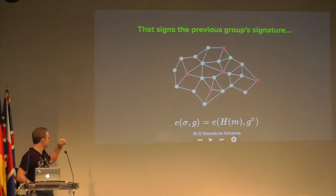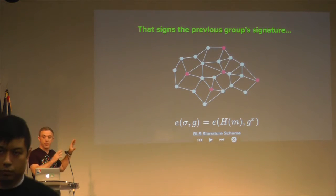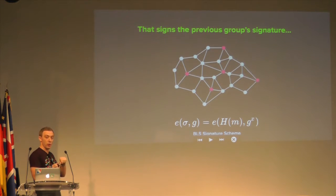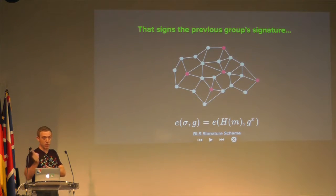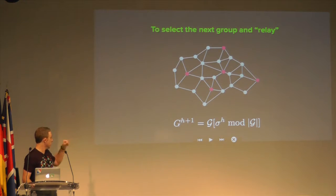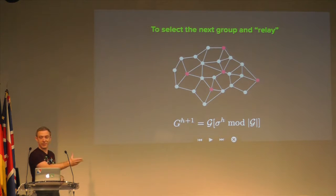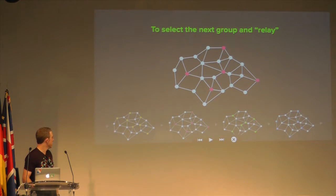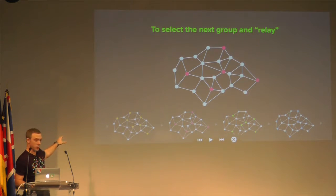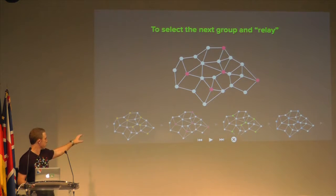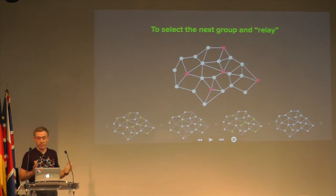The group at the current height signs the signature of the group at the previous height. So if you're at H, you're the group at H. To relay to the next H+1, what you do is you just create a signature on the signature at H-1. This creates a new random number — that sigma symbol is just the signature at H. You can modulo it by the length of the list of groups and that gives you the next group. It randomly selects the next group — that's the relay. So we're relaying between the yellow group, the pink group, the green group, and the blue group. That's what threshold relay is.